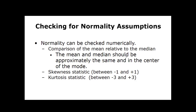You're going to check for normality numerically in three ways. First, compare the mean relative to the median — they should be approximately the same and centered near the mode. Second, look at the skewness statistic, which should be between negative one and positive one. If it extends past that range, you cannot assume normality.